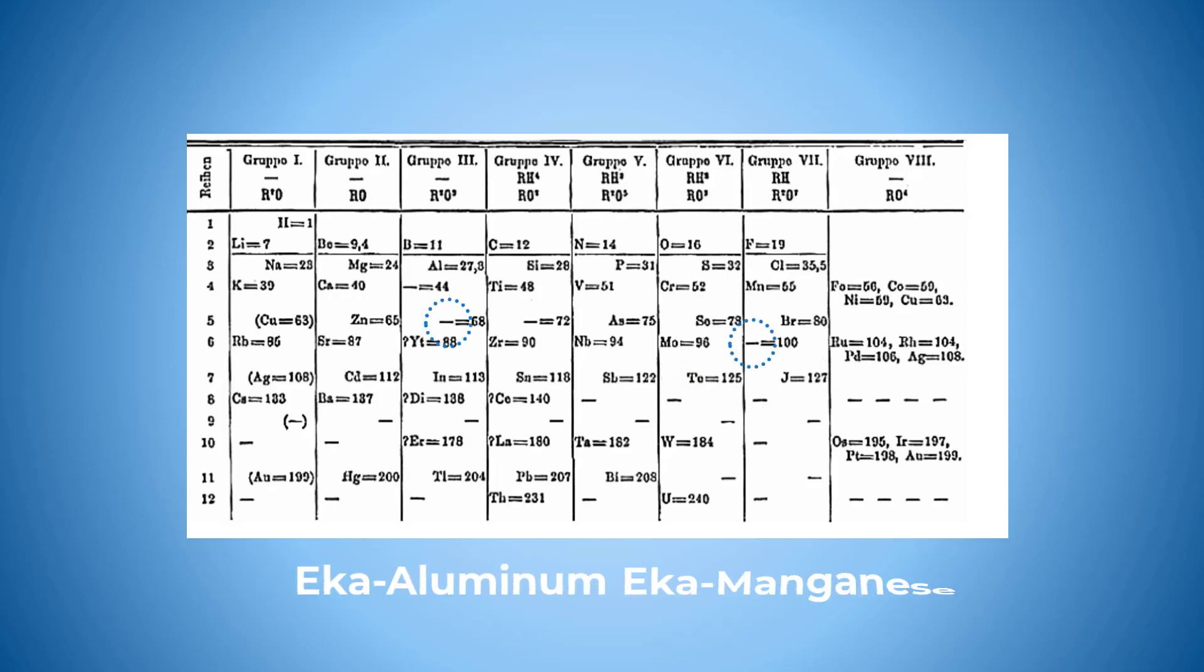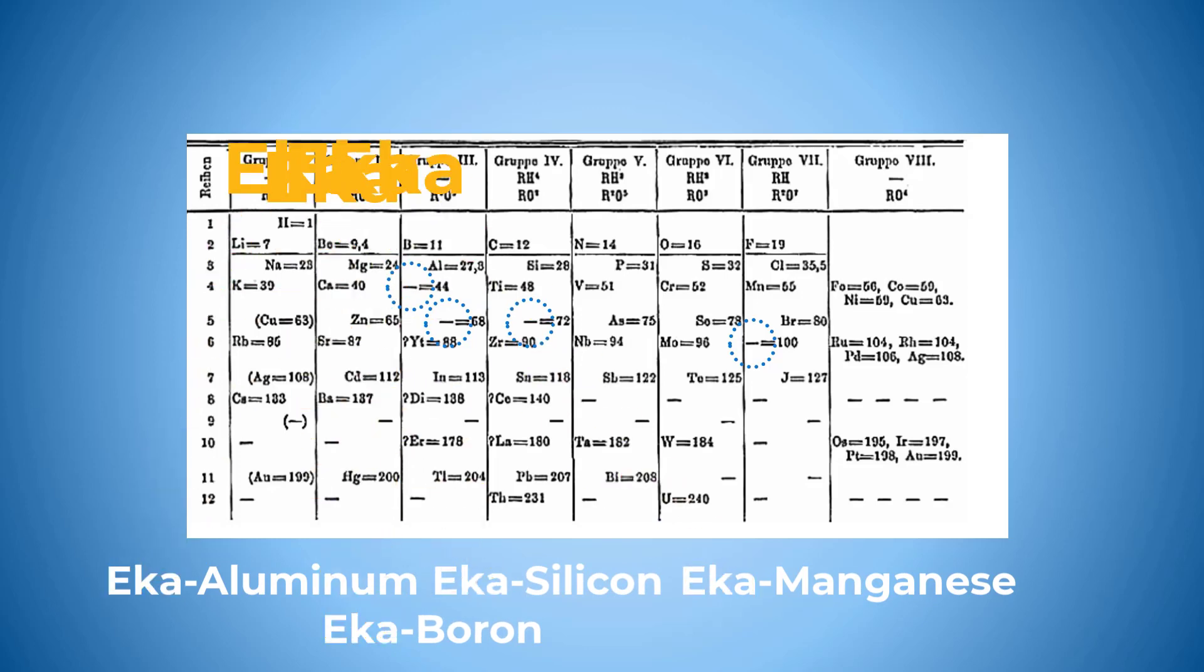Eca aluminium, eca manganese, eca silicon and eca boron. The word eca means underneath and that's how these elements got their names.